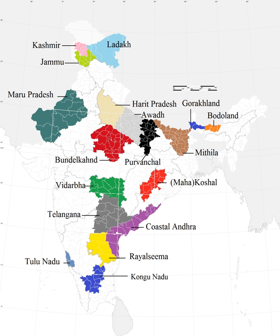Before independence, India was divided into British-administered provinces and nominally autonomous princely states, which were governed by the British administration. After the partition of India, some of these administrative divisions became part of the Dominion of Pakistan, whilst the remaining states and provinces formed the Dominion of India. The colonial system of administration continued until 1956, when the States Reorganization Act abolished the provinces and princely states in favour of new states which were based on language and ethnicity.